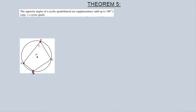So angle A plus angle C equals 180 degrees, and this angle plus this angle also equals 180 degrees. Opposite angles in a cyclic quad are supplementary. This is the reason you'd write when performing calculations using Theorem Number Five.